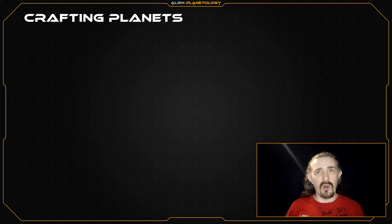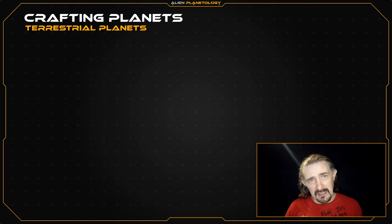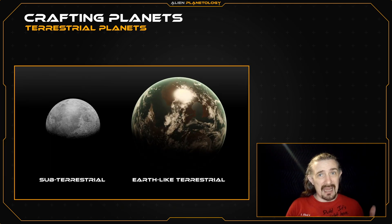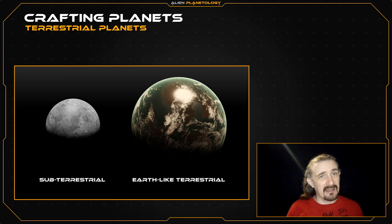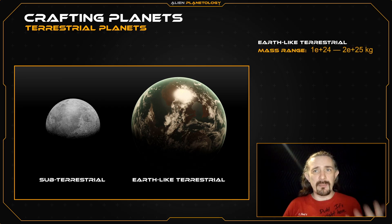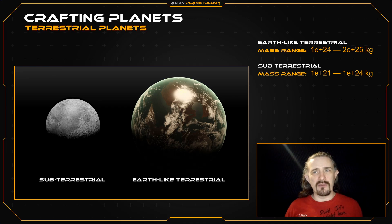Which two parameters are best to use depends on what type of planet you're crafting. This video will focus solely on crafting terrestrial planets. I will cover crafting Jovian planets, Icyan planets, and ice planets in separate videos. Additionally, we will be splitting the terrestrial category into Earth-like terrestrials and subterrestrials. Earth-like terrestrials are planets that have parameters roughly similar to those of Earth — most planets from science fiction fall into this category, but even Venus from our own solar system classifies as such. The mass range of Earth-like terrestrials spans from around 1×10²⁴ up to about 2×10²⁵ kilograms. Subterrestrials are planetary bodies below this range, down to approximately 1×10²¹ kilograms. The solar system planets Mercury and Mars both fall into this category, as do the rocky moons Luna and Io.